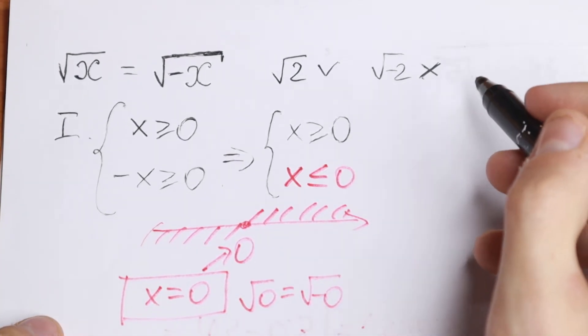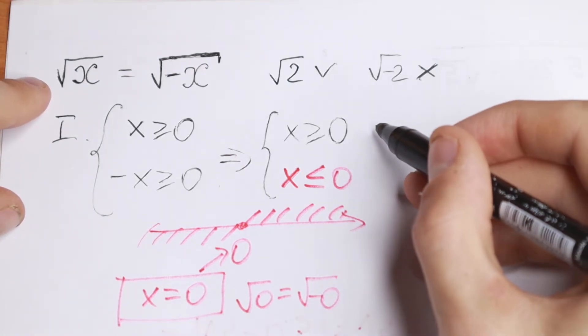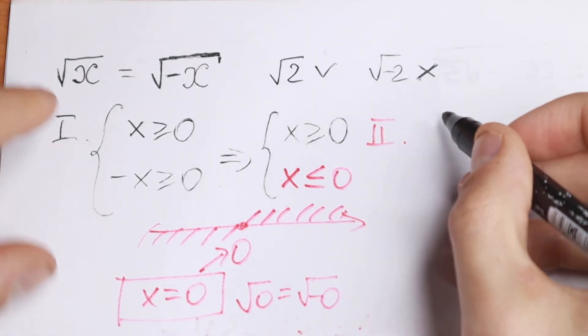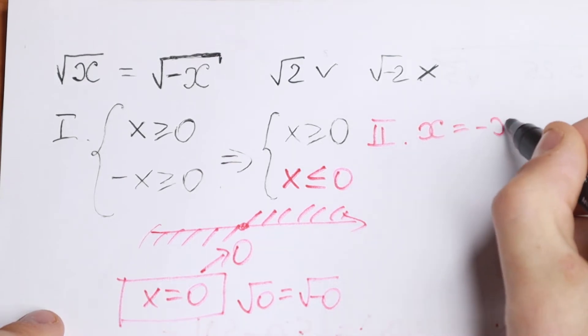But I want to show you a faster way to solve it. We raise both sides to the second power, and as a result, we have x equals minus x.